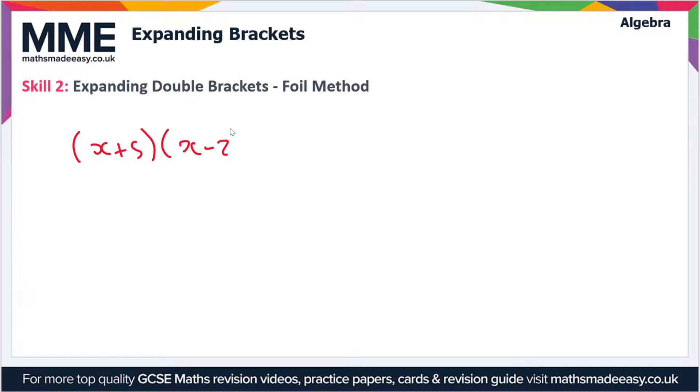You can think of this as x plus 5 lots of x minus 2. When we expand these out, we have to multiply each of the terms in the first bracket by the terms in the second bracket, and we do this with a method called FOIL.